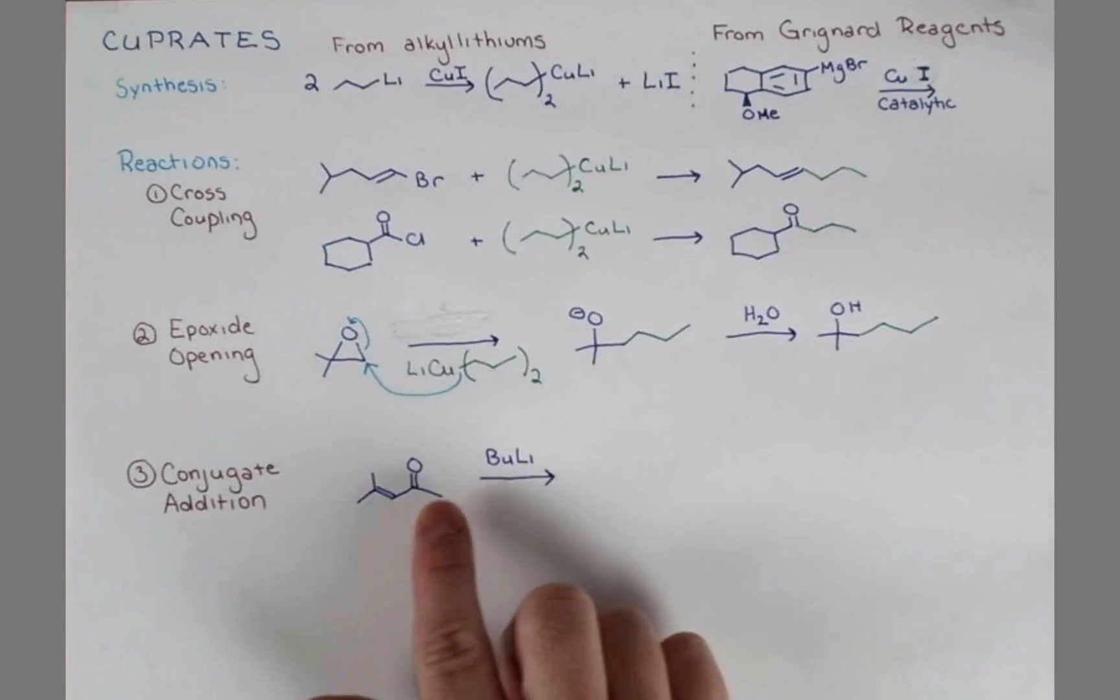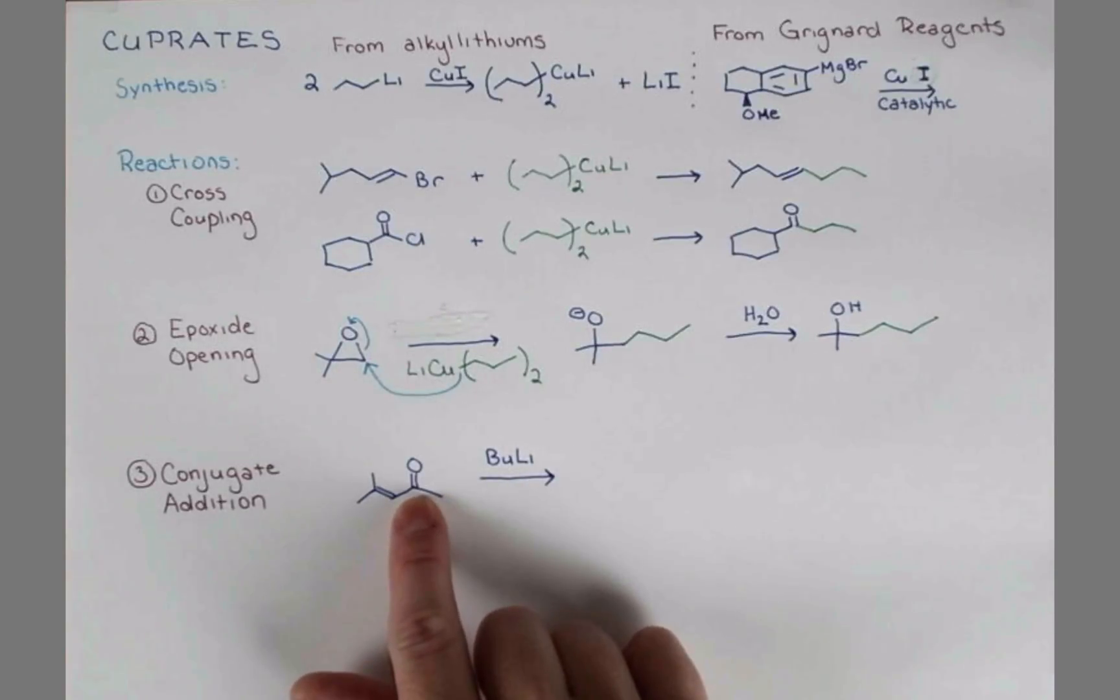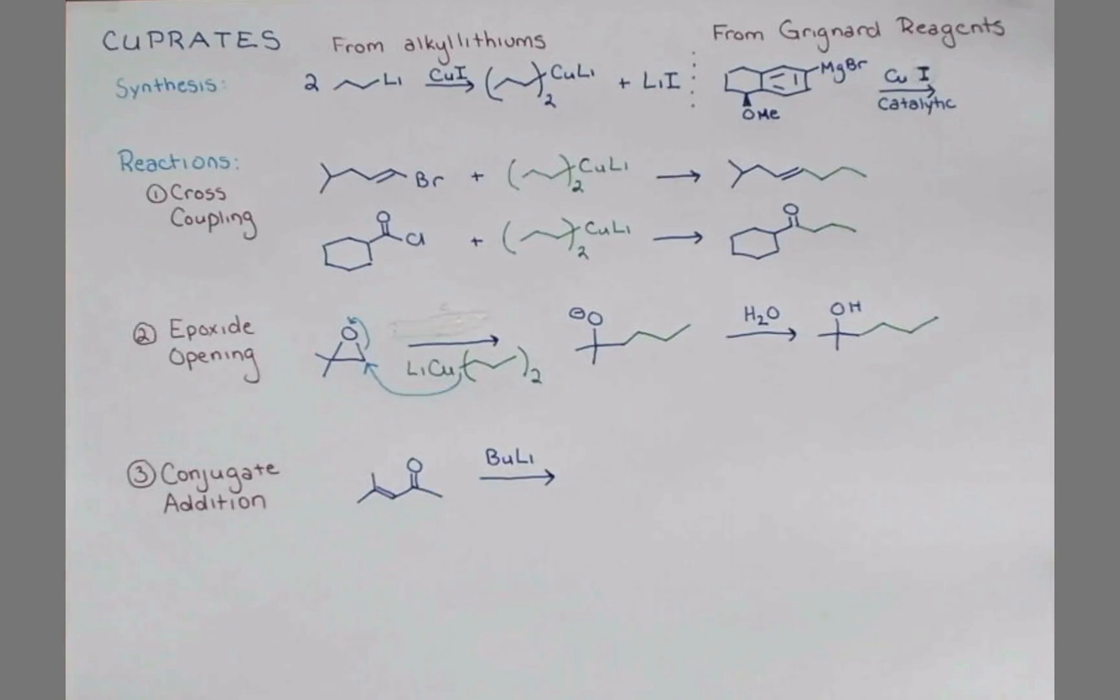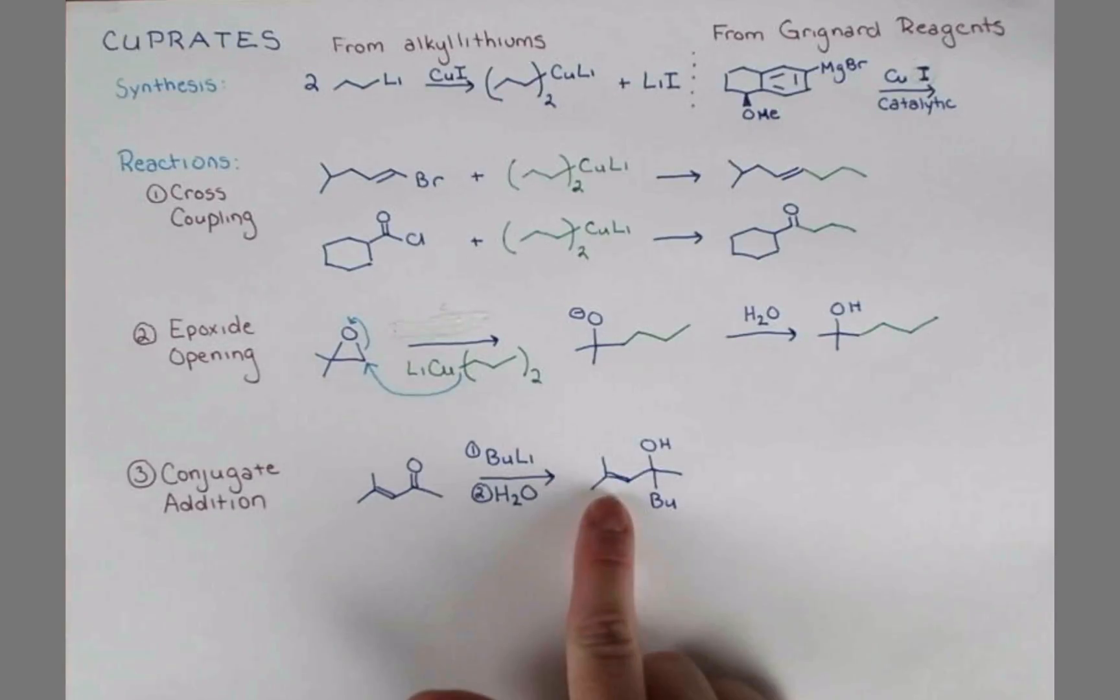When we treat this with butyl lithium, the carbonyl will be attacked, producing an alkoxide. And we can add in a second step, an aqueous workup, to protonate that and make an alcohol. So the final compound has the double bond intact and has added a butyl group to the carbonyl, converting it into an alcohol.